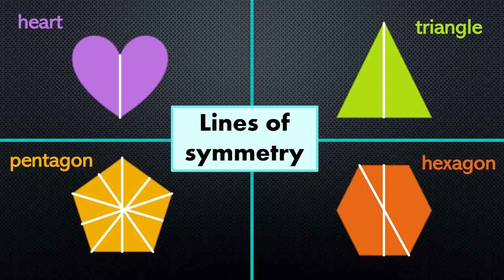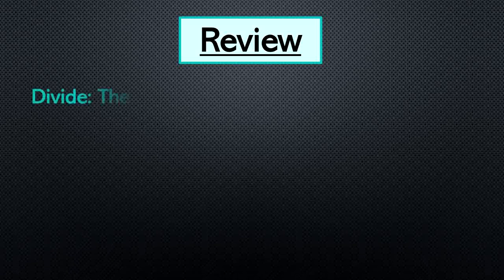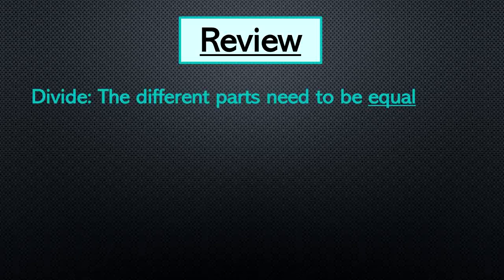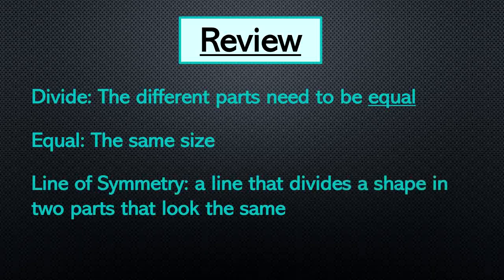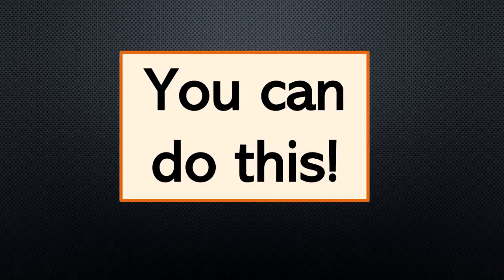Let's review. When we divide shapes, we need the different parts to be equal. Equal means the same size. And a line of symmetry is a line that divides a shape into two parts that look the same. You can do this, boys and girls!